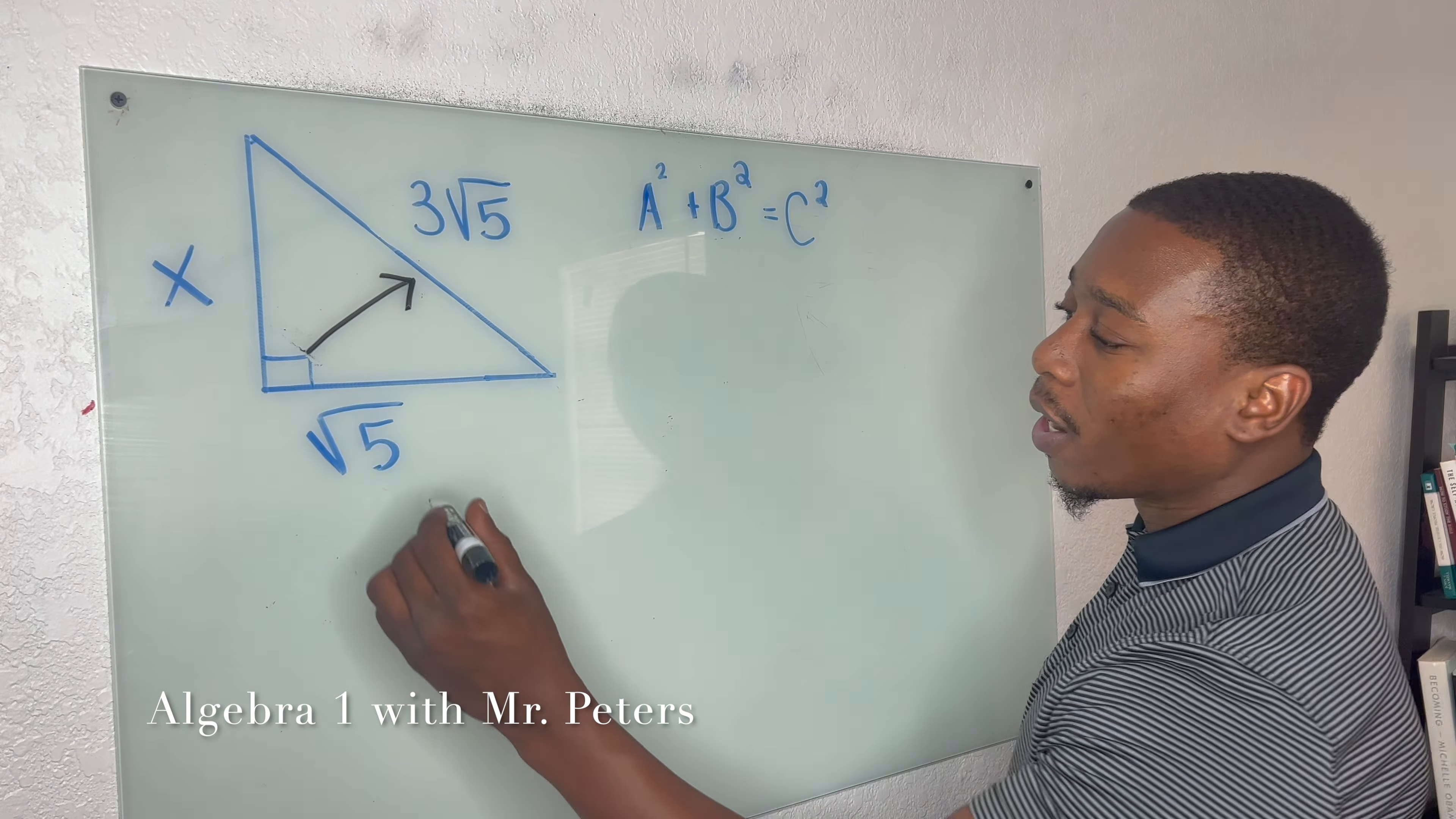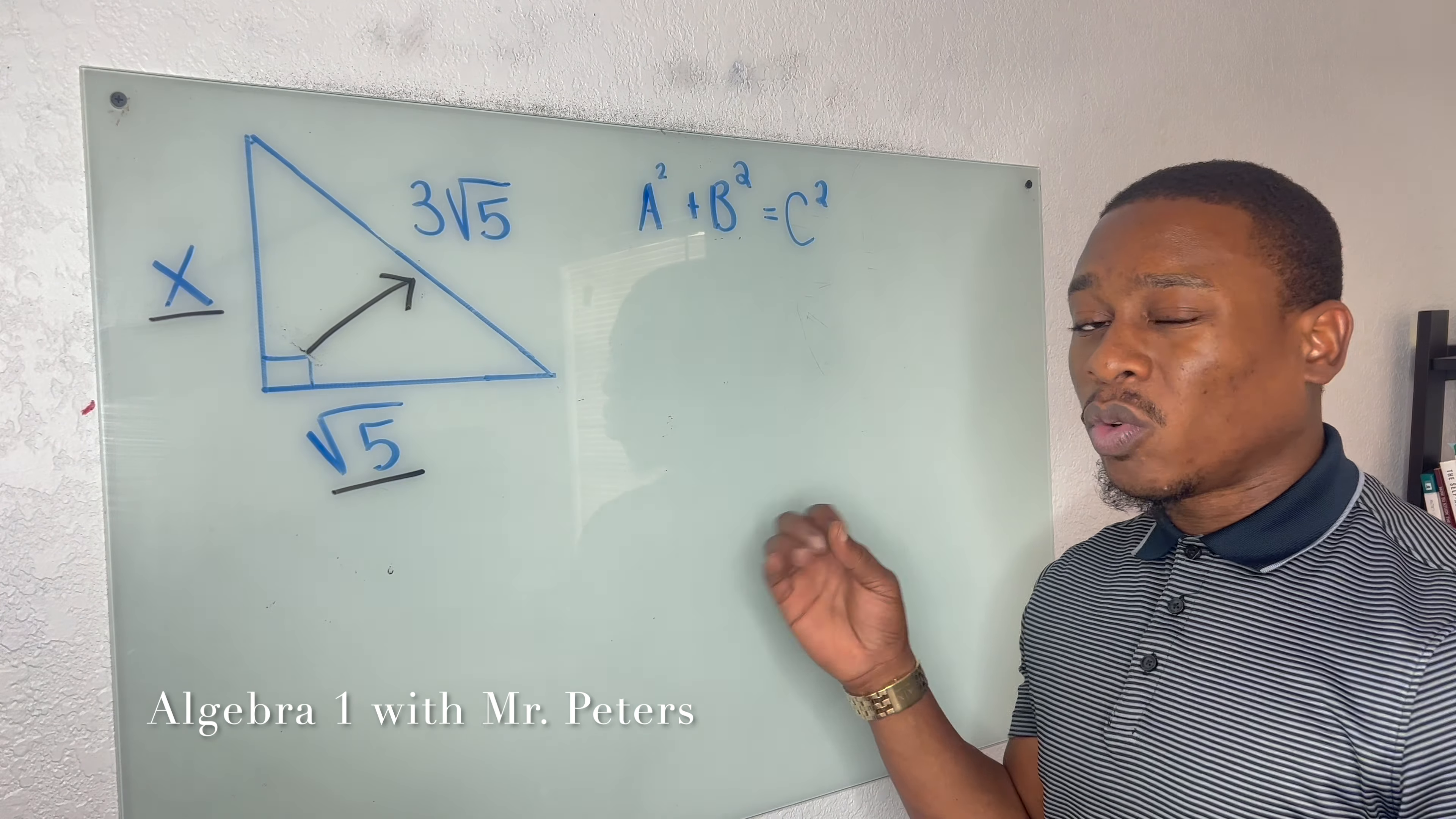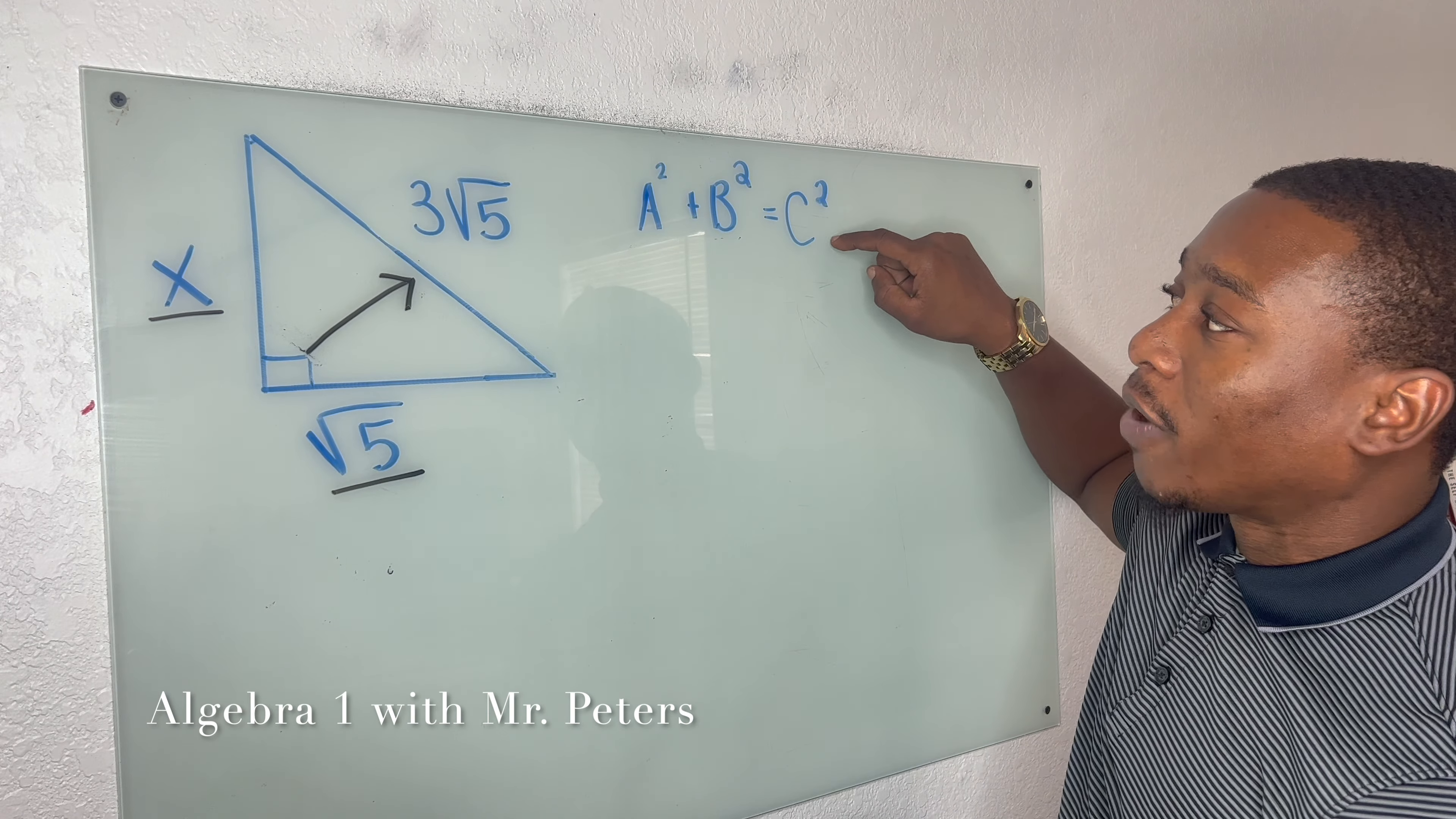When we talk about A and B, if we get this wrong or flip them around, we'll still get the problem right. However, the biggest thing is just to make sure we correctly identify C.